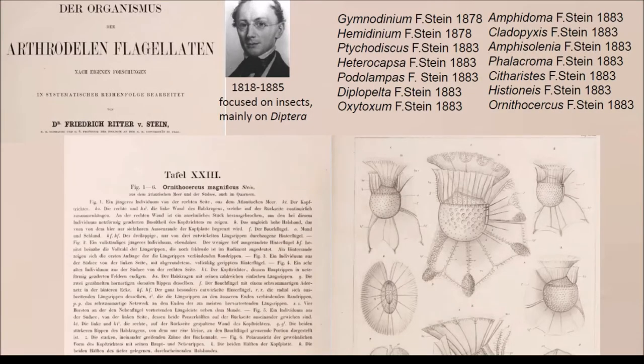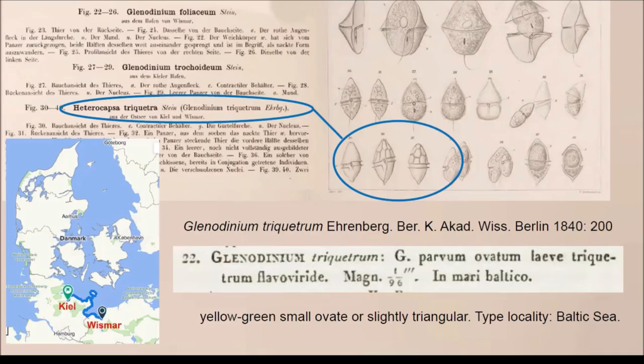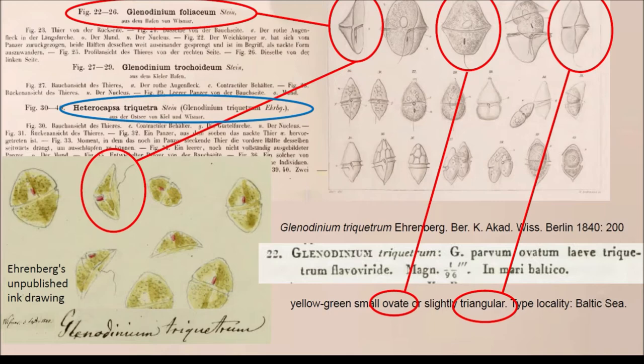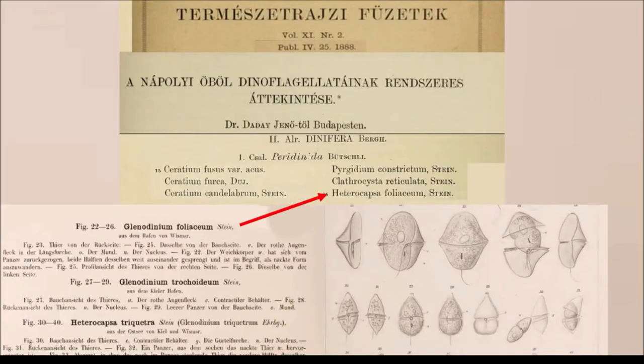Stein was an entomologist. He described several genera of dinoflagellates and he also visited the same place where Ehrenberg worked, and he described a tropic for the species that Ehrenberg described as Glenodinium trichetum. So when the illustration of Ehrenberg appeared, we realized that Stein described a distinct species under that name, while Ehrenberg described Glenodinium foliaceum, which was later transferred to Ethelokapsa.